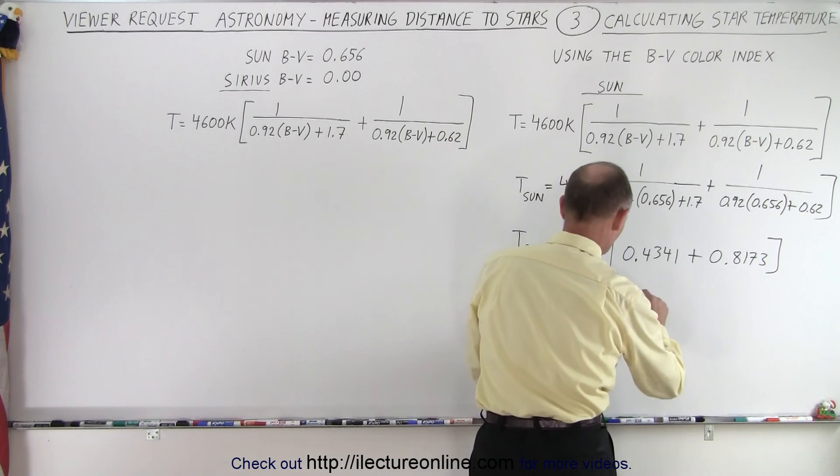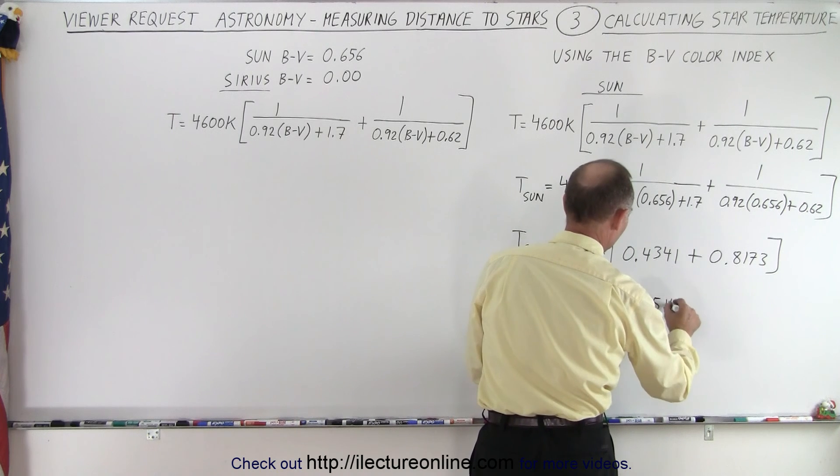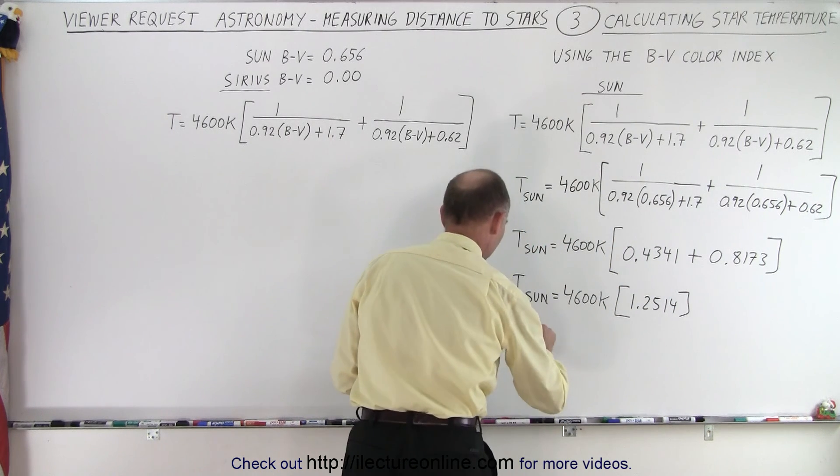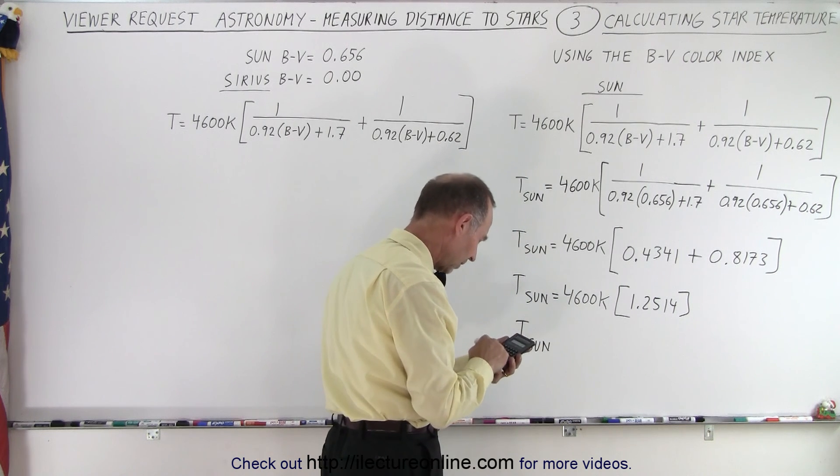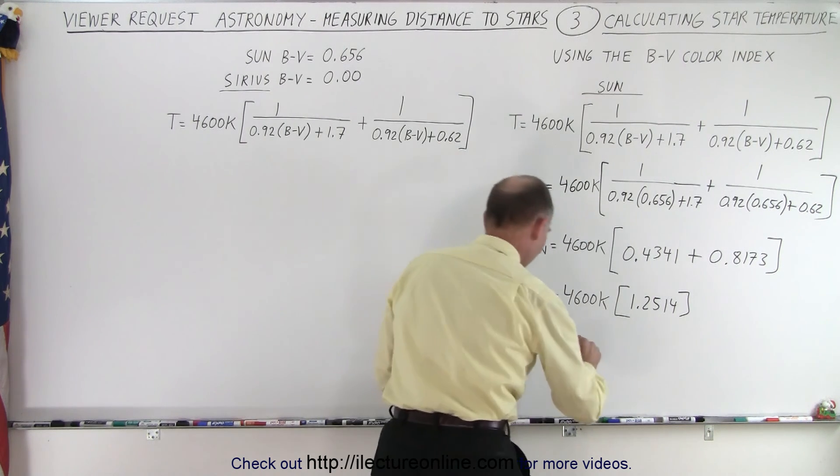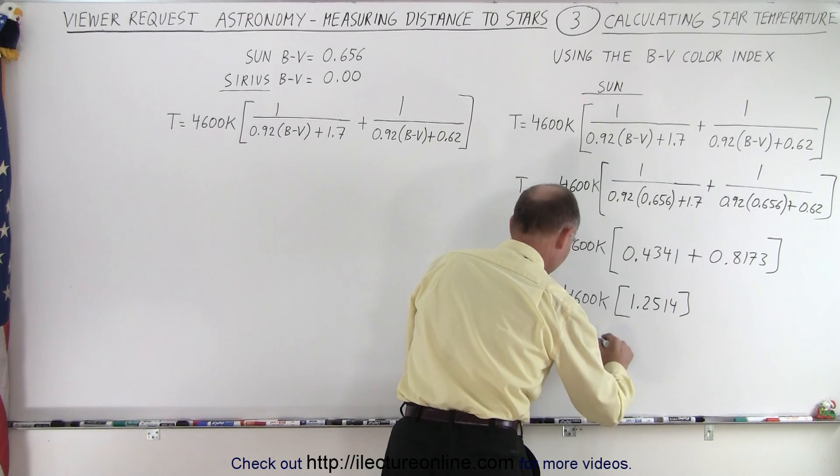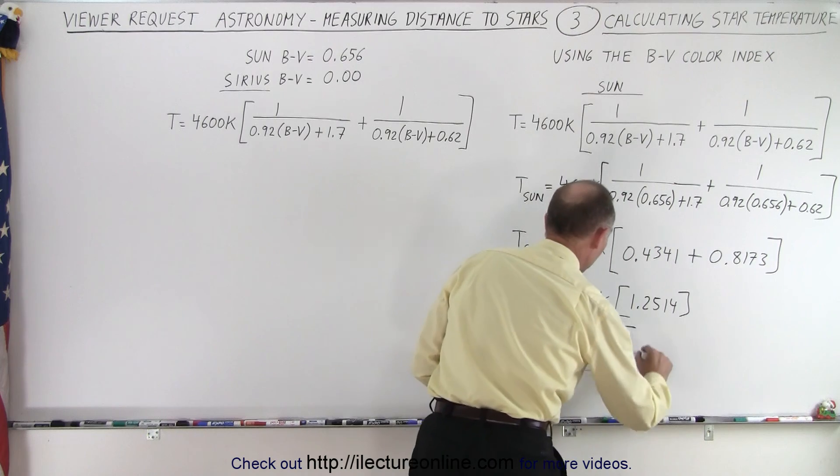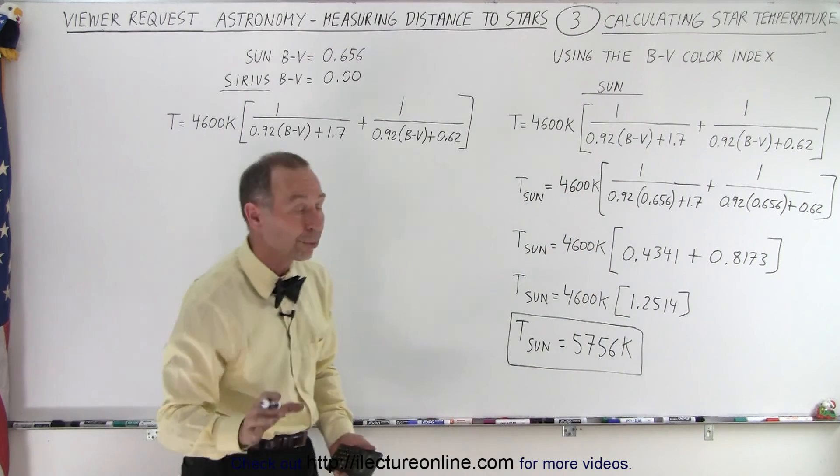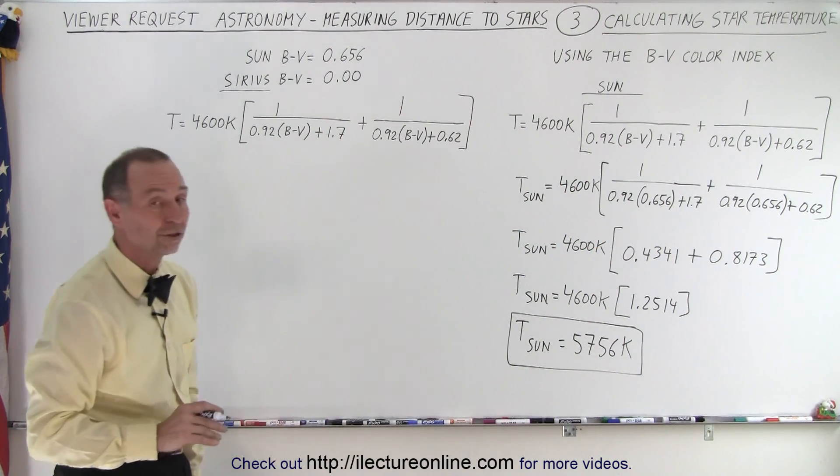Now if we multiply that times 4600, we get 5756 Kelvin, which is very close to the calculated observed temperature, surface temperature of the Sun.